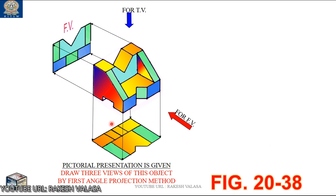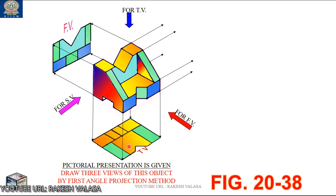For the side view, here two different side views are there — one is the right side view and another one is the left side view. For the given problem, we are having the left side view. Why we are calling it the left side view: this side view is on the left side of the front view. These projectors fall on the right side of the profile plane. The profile plane is perpendicular to both the horizontal plane and the vertical plane. We get the side view on the right side of the front view.